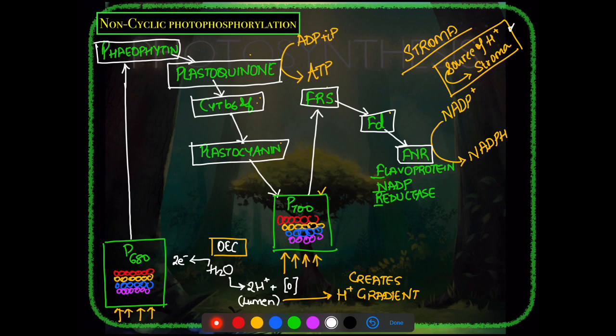Looking at the entire diagram, the non-cyclic photophosphorylation pathway takes a characteristic zigzag shape — this is why it is also called the Z scheme. This zigzag shape forms when all electron carriers are placed in sequence on a redox potential scale.